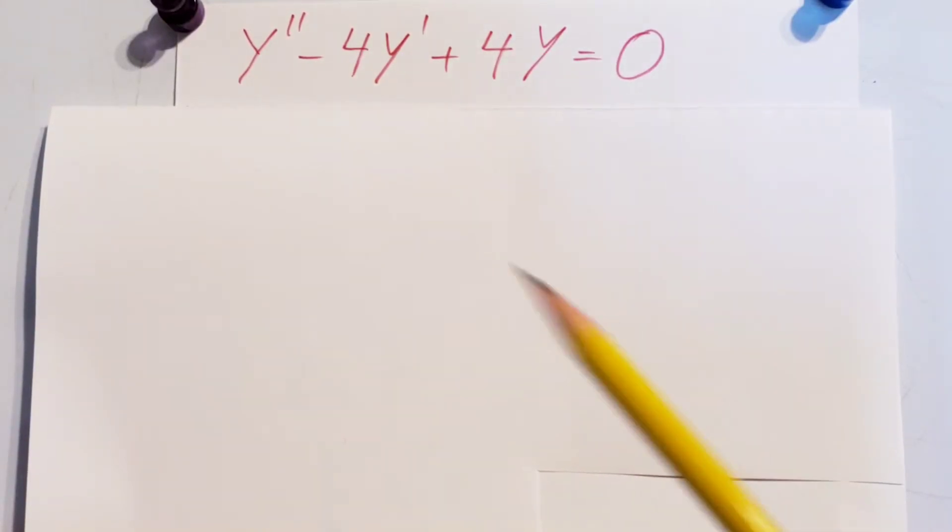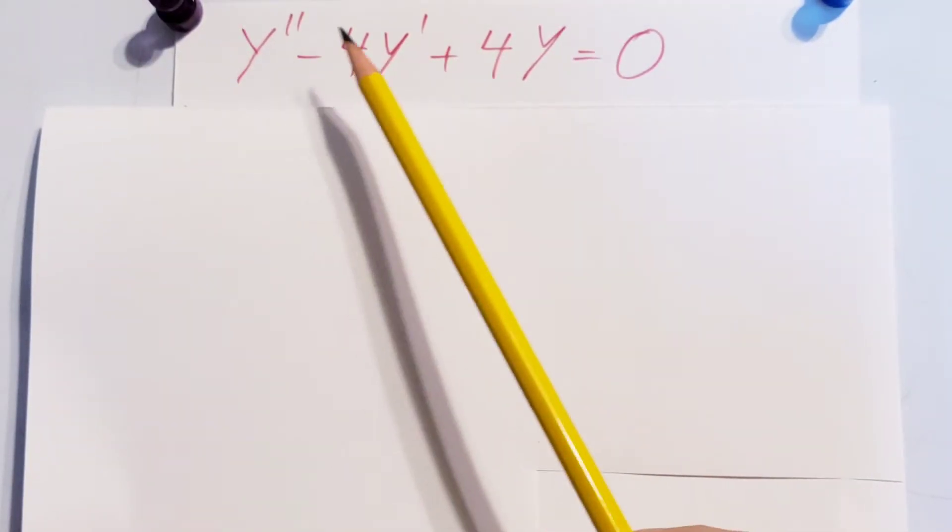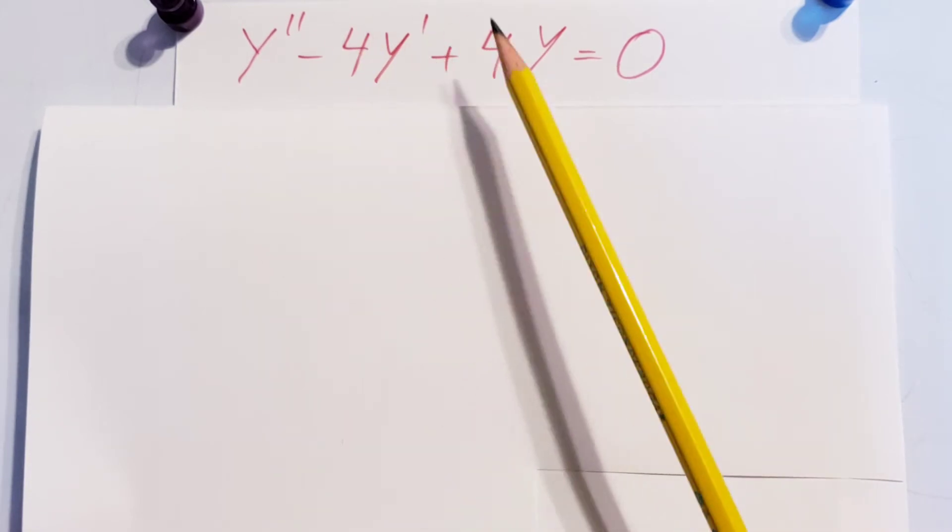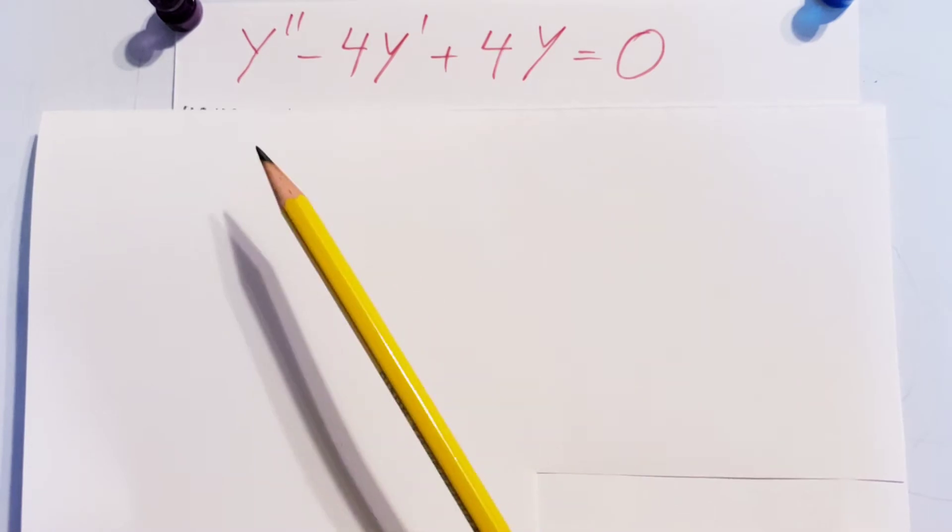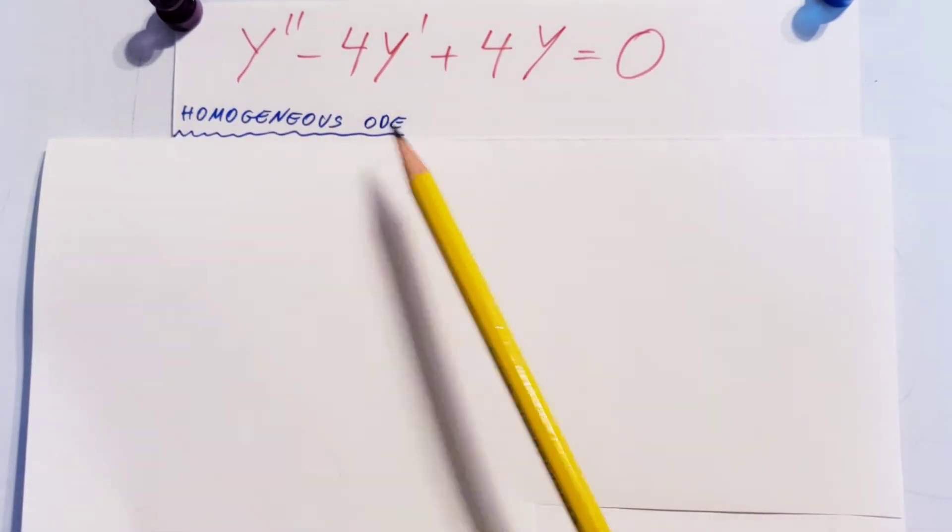Let's solve this ODE: y'' - 4y' + 4y = 0. There's nothing on the right-hand side, so this is a homogeneous ODE.